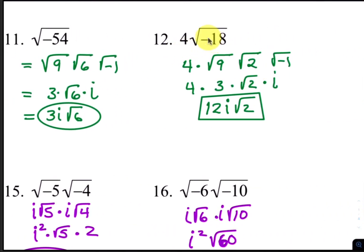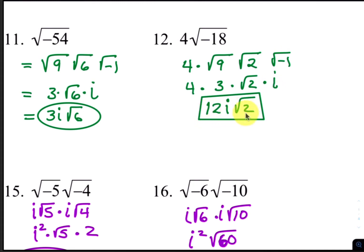For number 12, rewrite the square root of negative 18 as the square root of 9 times the square root of 2 times the square root of negative 1. The square root of 9 is 3, and 3 times 4 is 12. The square root of negative 1 is i, so your final answer is 12i radical 2.